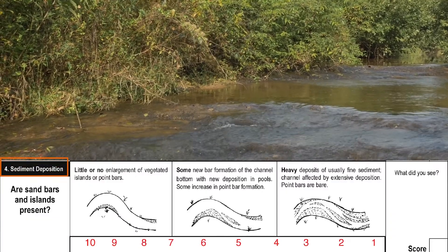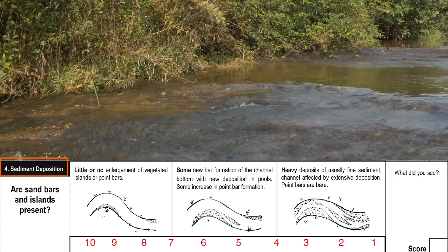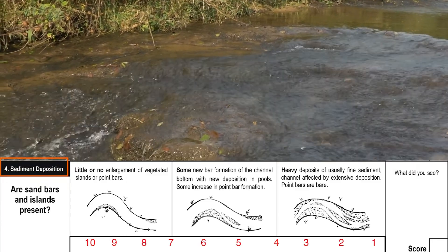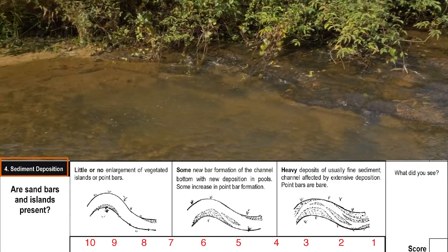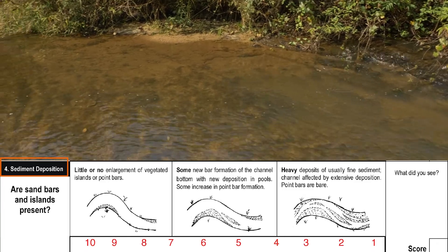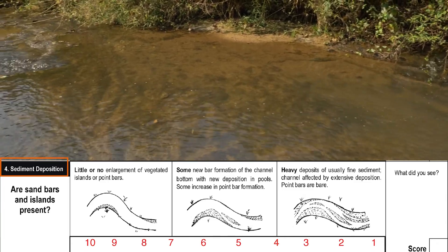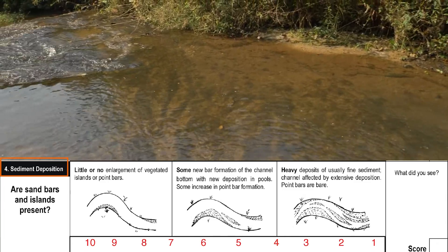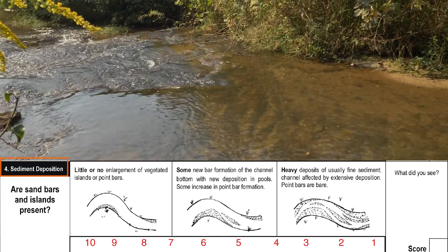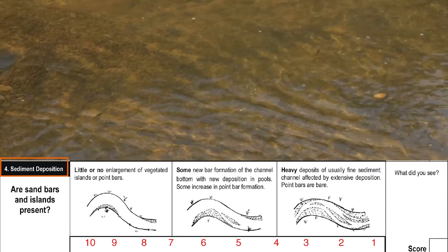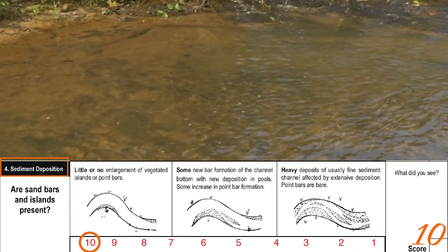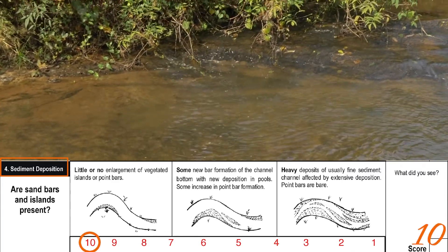Sediment deposition evaluates how sediment is changing the stream's morphology. Are there sandbars or islands forming, and how stable are they? This stream has no islands or growing sandbars, giving it a 10, unlike these examples.